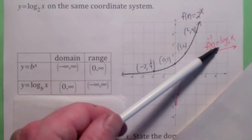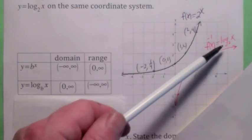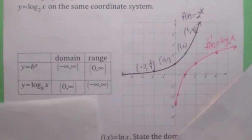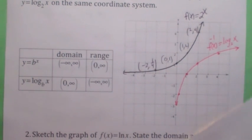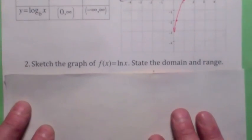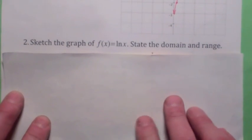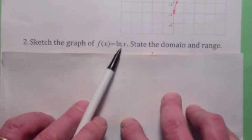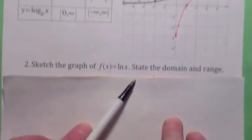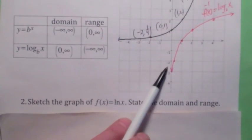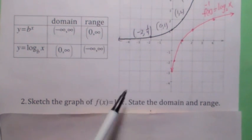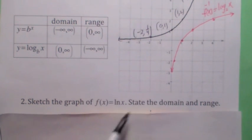They all pretty much look the same. The graph of all the log functions looks pretty much the same, as long as the base is greater than 1. So would you be too surprised if I told you that to graph f of x equals natural logarithm of x, the graph would look kind of like log base 2 of x, because e to the x looks a lot like 2 to the x?